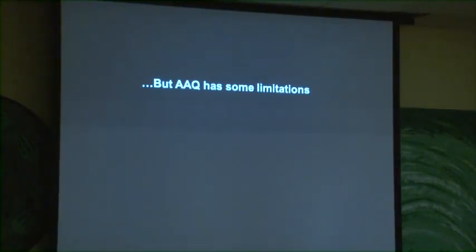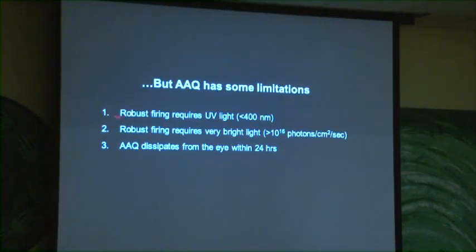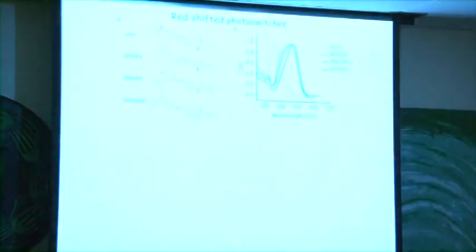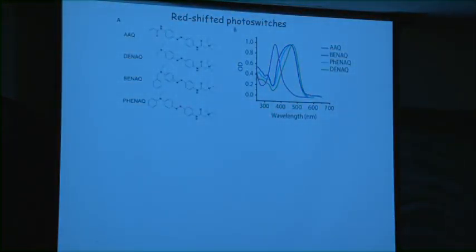The AAQ molecule we published on has some problems. It requires UV light, which won't be useful in humans because the lens and cornea filter it out before it reaches the retina. It also requires very bright light — like standing on a mountain in snow at noon without ski goggles. And this molecule dissipates rather quickly from the eye, requiring frequent resupply. So we've been searching for derivatives of AAQ that are more useful.